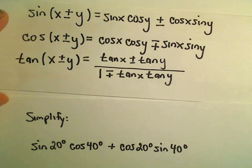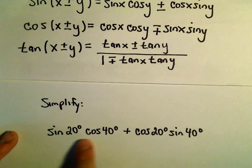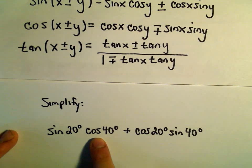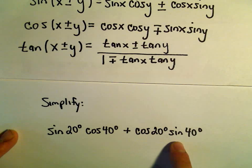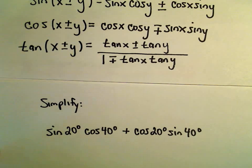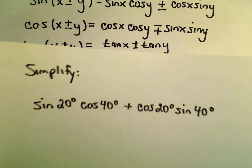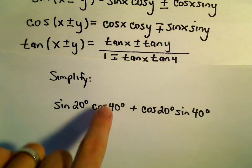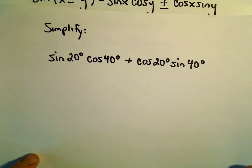So, the first one here, we're going to simplify sine of 20 degrees times cosine of 40 degrees plus cosine of 20 degrees times sine of 40 degrees. Well, just picking out the identity that it looks like, there's sines and cosines mixed up, so that has to do with the first one.